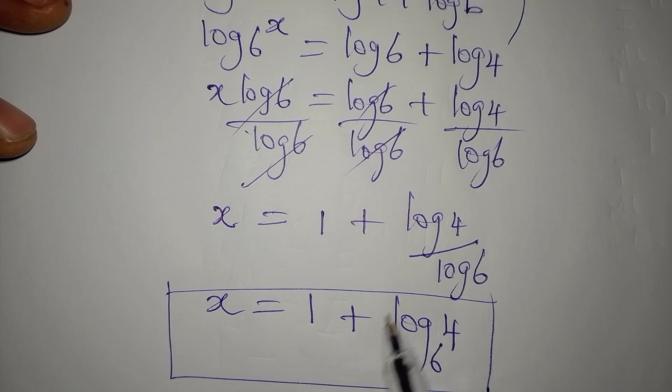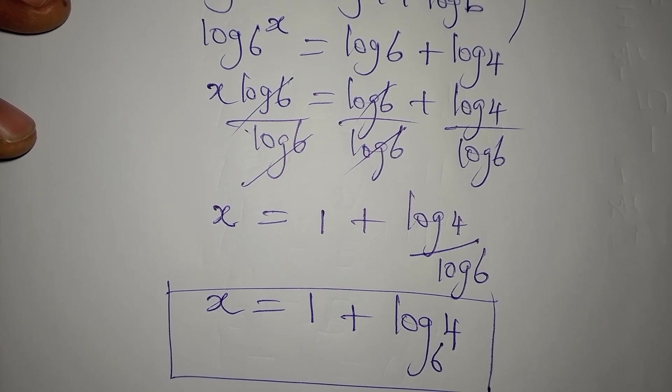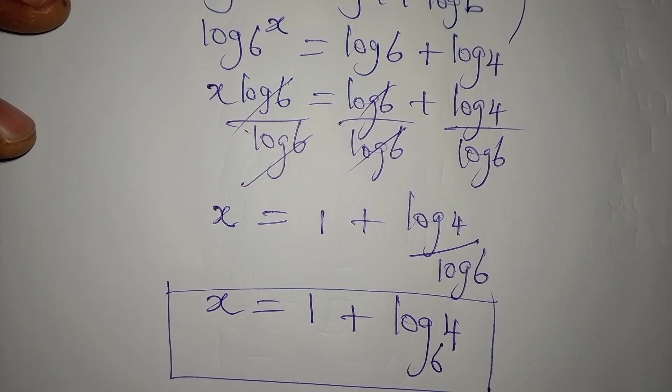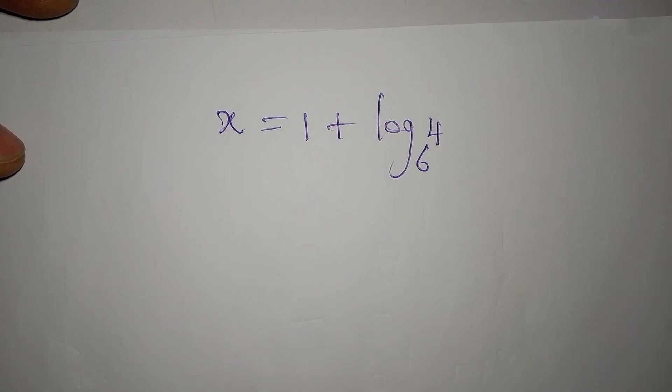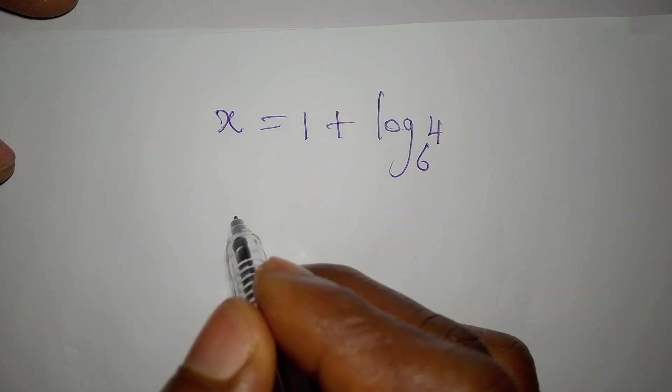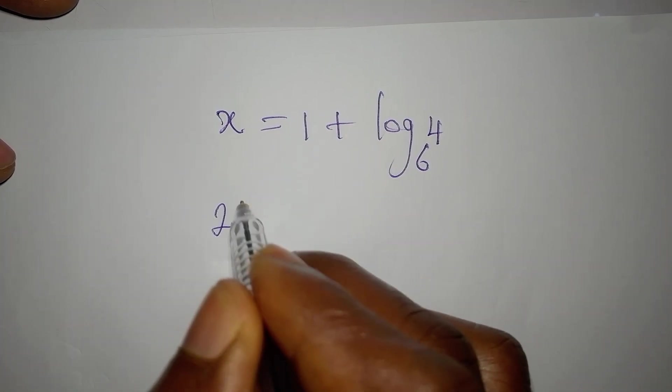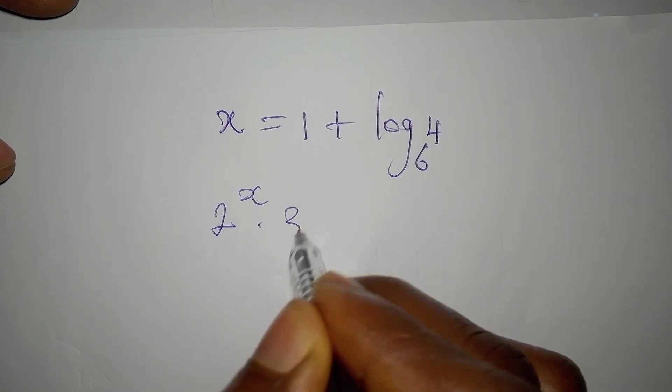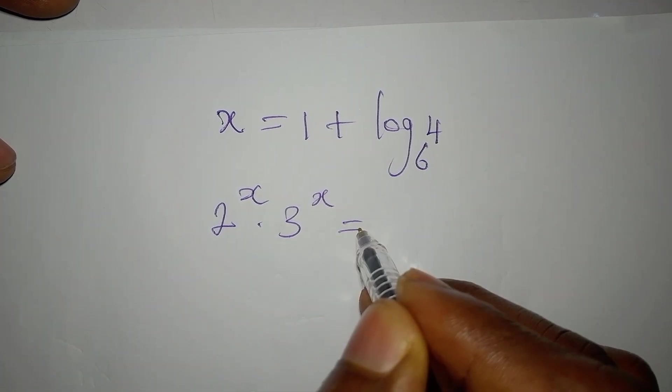Now let's verify very quickly to be sure we are correct. The equation is 2 to the power of x multiplied by 3 to the power of x equals 24.